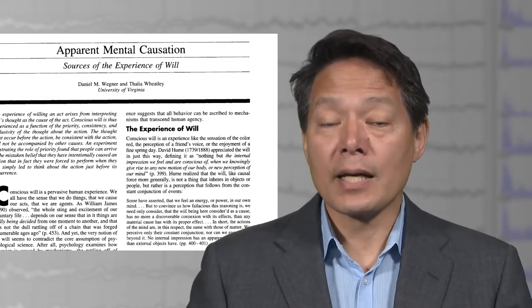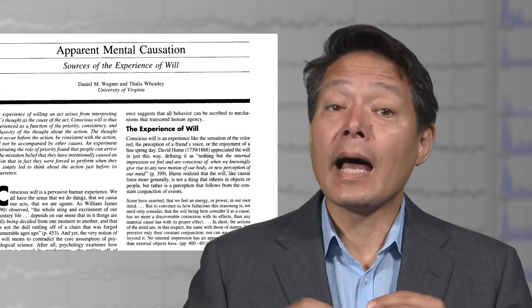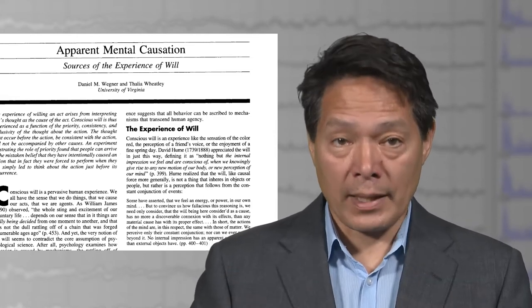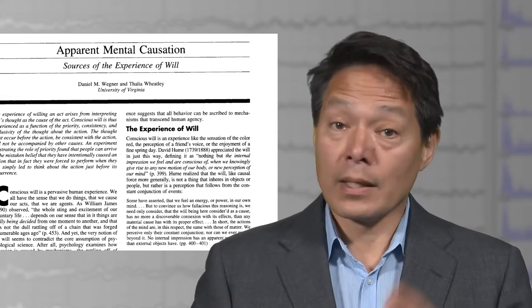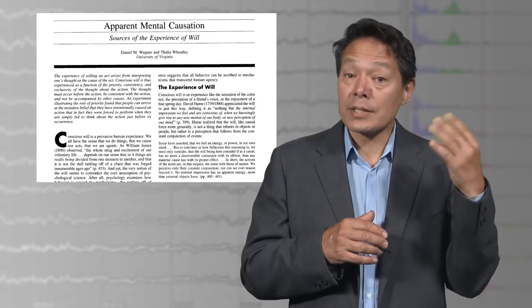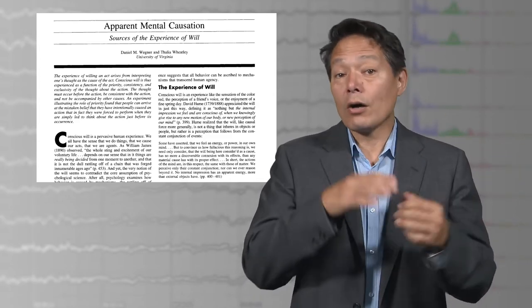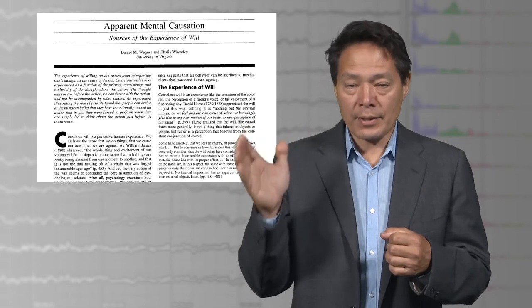Once the cursor stopped, the participants had to rate how in control they felt of the placement of the cursor from 'I allowed the stop to happen,' meaning I was not in control of its placement, all the way to 'I intended to stop on this object,' meaning I was in full control of its placement.